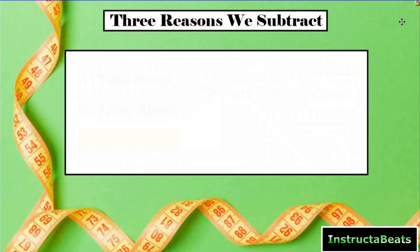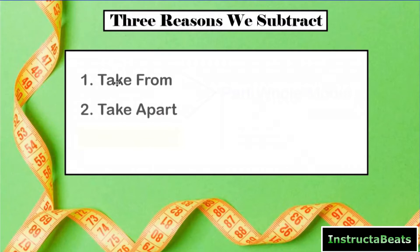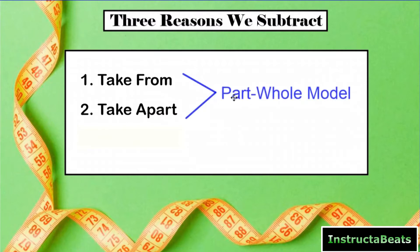Before we do that, let's review three reasons we subtract. The first two reasons are when we are taking from something or taking something apart. We've talked about that before and we're going to use a part-whole model to show that. So if you're taking from something, you could have 10 apples and you're taking two away. Or if you're taking something apart, you could be looking for a missing part, and we're going to show that with a part-whole model.